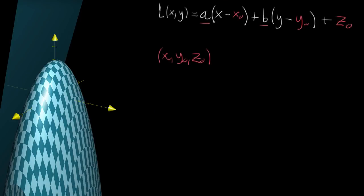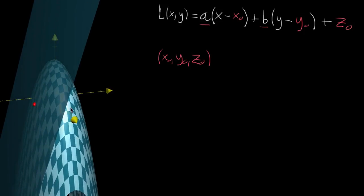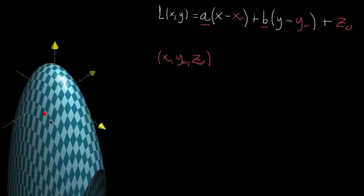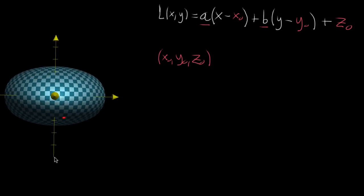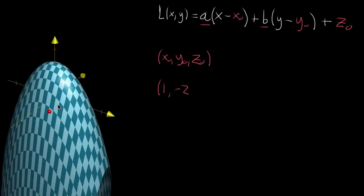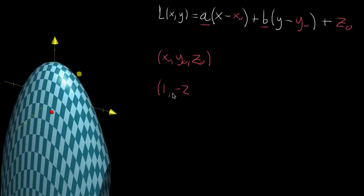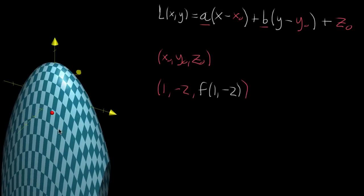With that said, let's start thinking about how you can find the tangent plane to a graph. When specifying the point, since the point has to be somewhere on the graph, you only specify two coordinates — x and y. Let's say x is one and y is about negative two. Then the z coordinate is forced to be whatever the output of the function is at (1, -2). So the point is (1, -2, f(1, -2)).